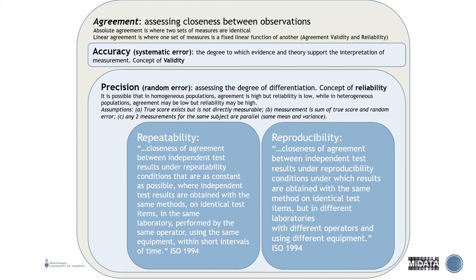Precision deals with random error — assessing the degree of differentiation. This is the concept of reliability in medicine. In a homogeneous population, agreement can be high but reliability low, while in heterogeneous populations agreement may be low but reliability high. Assumptions for precision: a true score must exist but is not directly measurable. Measurement is the sum of true score and random error, and any two measurements for the same subject are parallel — same mean and variance.